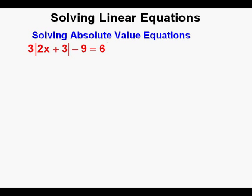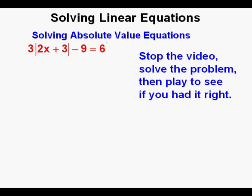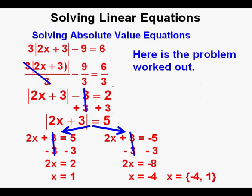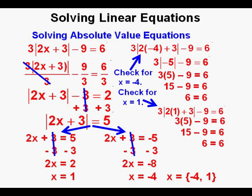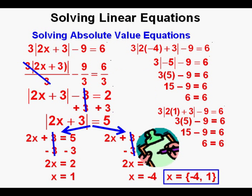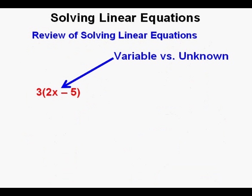Let's look at this equation: 3 times the absolute value of quantity 2x plus 3 minus 9 equals 6. This is a good problem similar to the last equation — try to solve it, then play to see if you got the right answer. The first step is simplifying by dividing all terms by 3. Checking both negative 4 and 1, they both end up as 6 equals 6. Our answers are x equals negative 4 and x equals 1. Check.